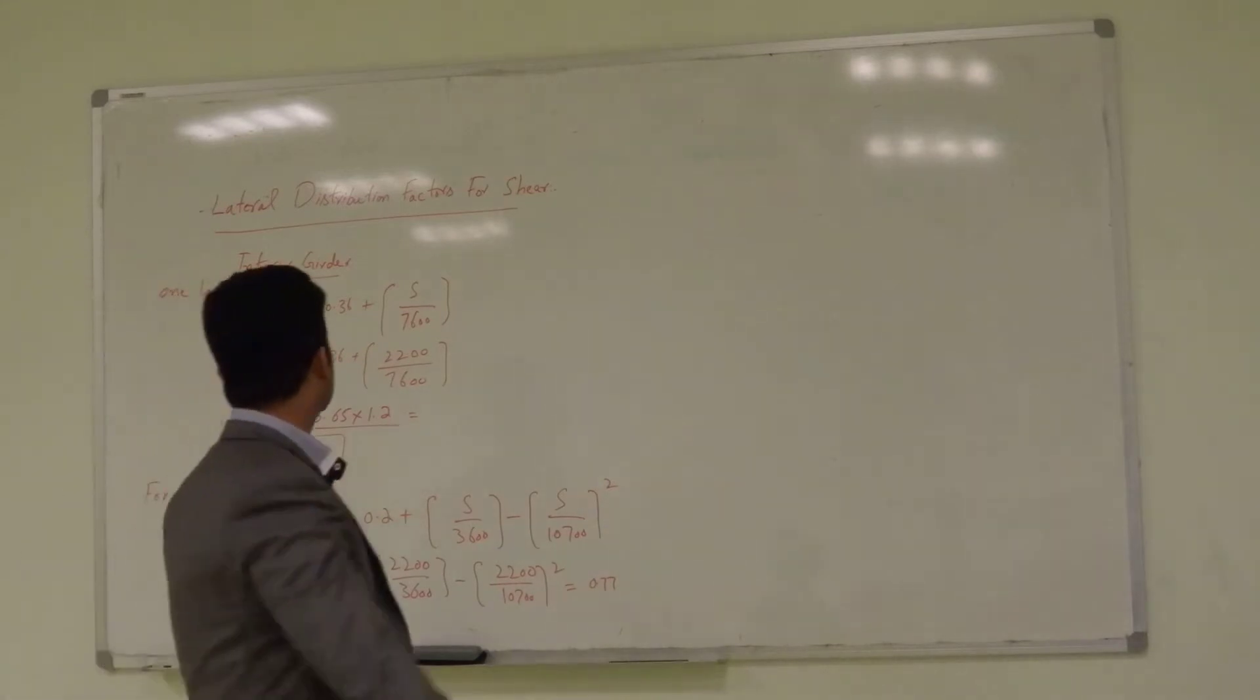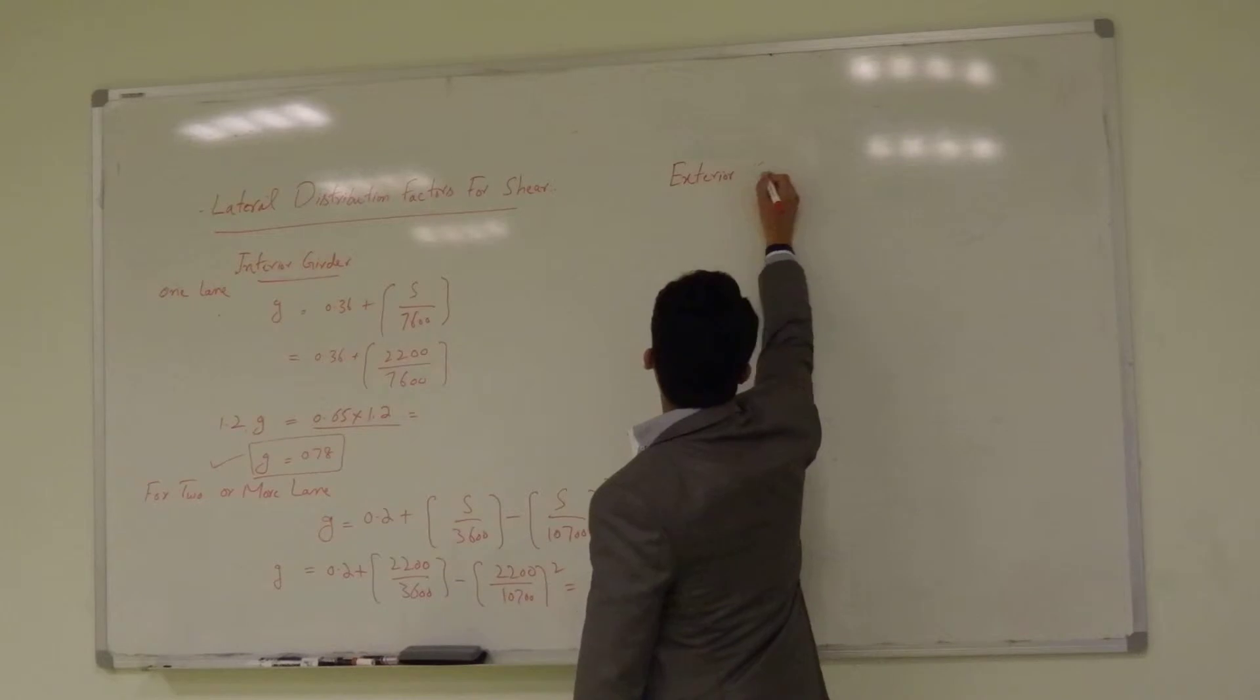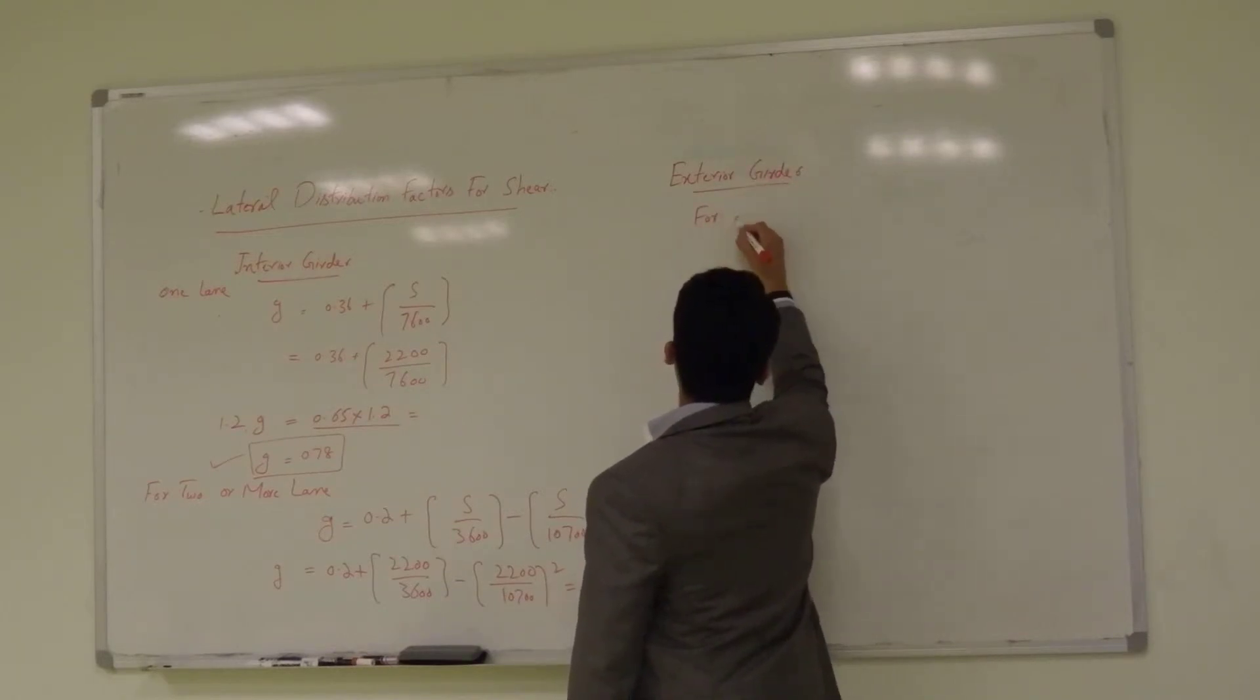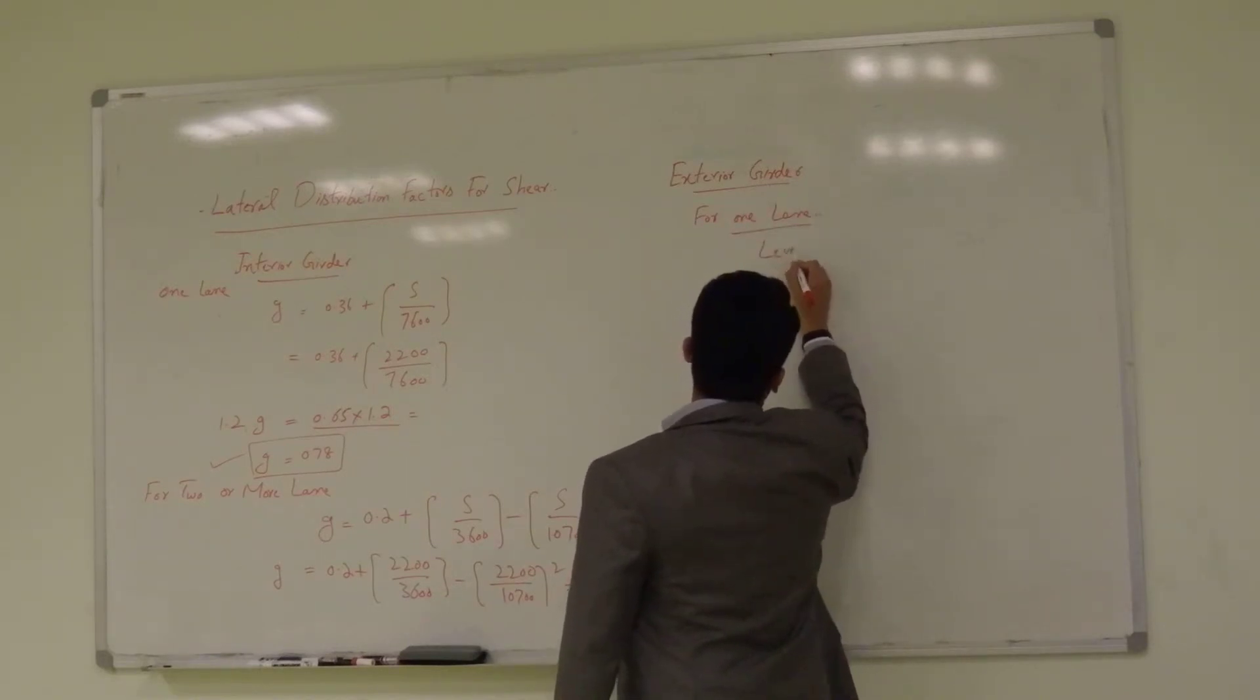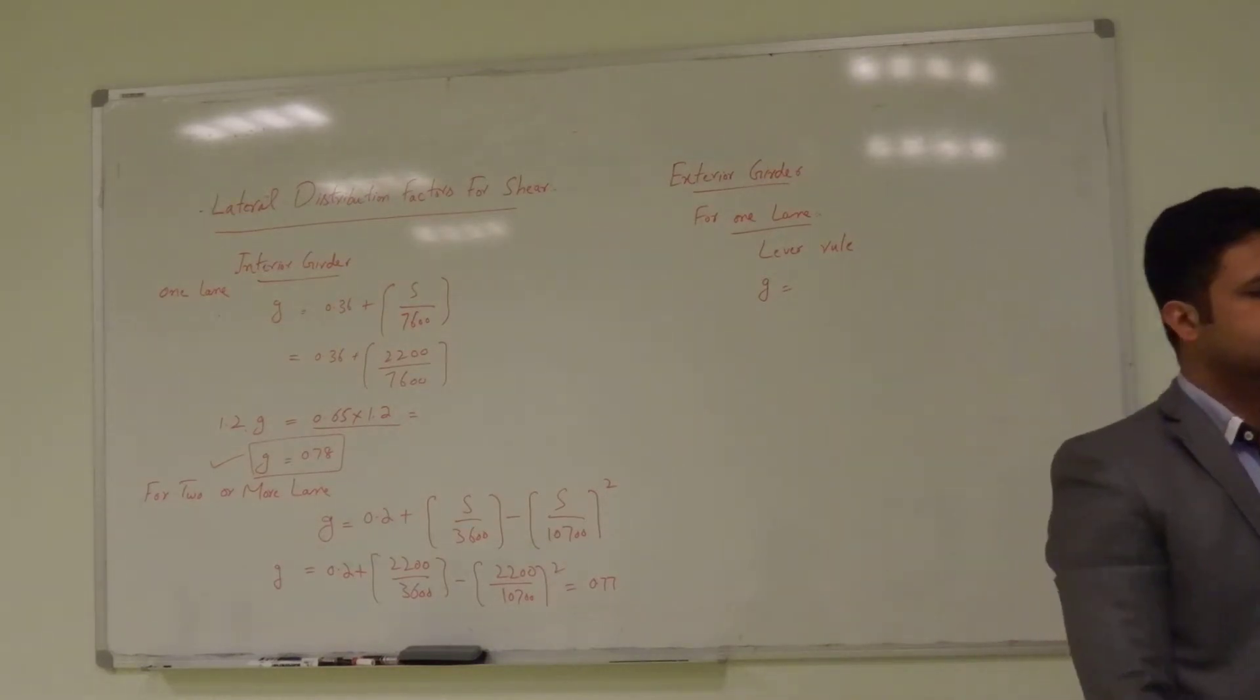Now let us talk about exterior girder. Exterior girder for one lane we have to use the lever rule and we already use this rule to find g for the moment and we will use the same g. So, we have done it before. We have found the g value for the moment by using the lever rule for one lane loaded. So, the same value we are going to use it here. Can you tell me the value?